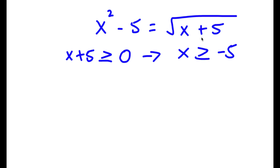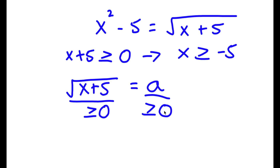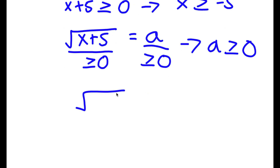Now I'm going to set the square root of x plus 5 equal to the variable a. So now I have the square root of x plus 5 is equal to a. Now because this has to be greater than or equal to 0, then a must also be greater than or equal to 0.